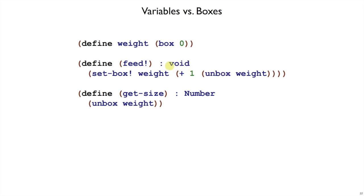So the feed function will use unbox to get the current value out, it'll be zero the first time, and then add one to it, so it'll be one that first time, and then installs the one as the new value inside the box weight. Meanwhile, getSize can get the current size of the fish by unboxing weight, getting the current value out of that box.